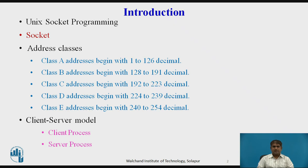IP addresses are managed and created by the Internet Authority of Assigning Names and Numbers, i.e., ICANN. There are 5 different address classes. You can determine which class an IP is in by examining the first 4 bits of the IP address. Class A address begins with 1 to 126 decimal. Class B address begins with 128 to 191 decimal. Class C address begins with 192 to 223 decimal. Class D address begins with 224 to 239 decimal. Class E address begins with 240 to 254 decimal.